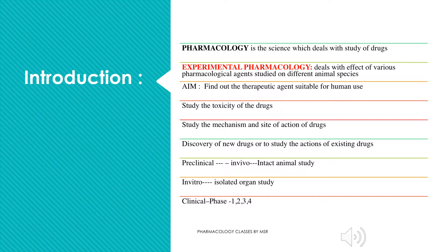These are called preclinical studies, which can be done either in vitro or in vivo. In vitro means we isolate an organ or tissue and study it in the laboratory, whereas in vivo means we do the experiment in an intact animal. Once preclinical studies are cleared and results are good, we proceed to clinical studies done in phases 0, 1, 2, 3, and 4, where phase 4 is post-marketing surveillance.